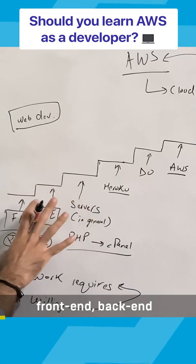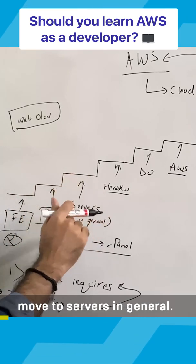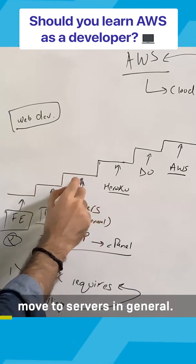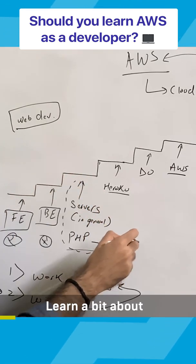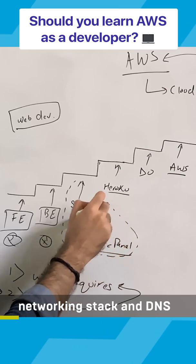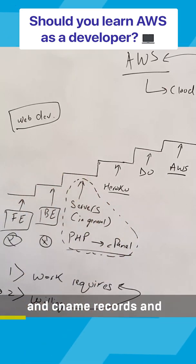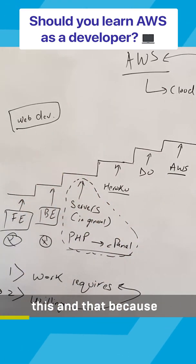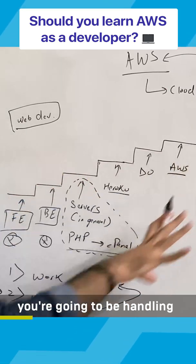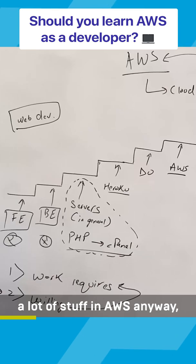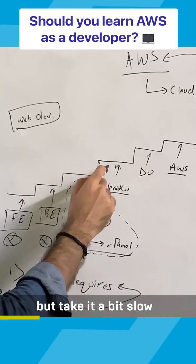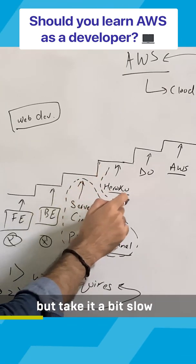You should start with front-end, back-end, move to servers in general, learn a bit about networking, stack, and DNS, and CNAME records, and this and that, because you're going to be handling a lot of stuff in AWS anyway. But take it a bit slow.